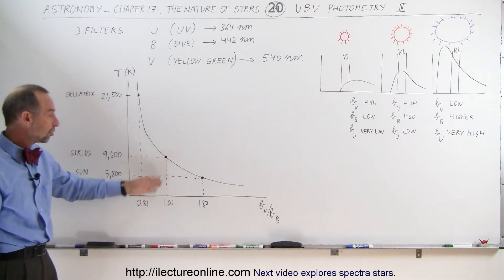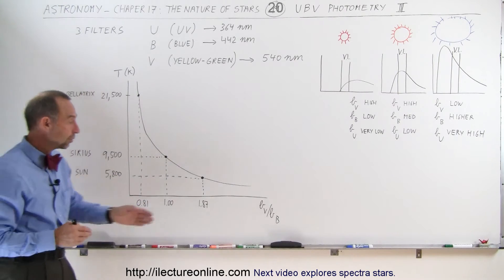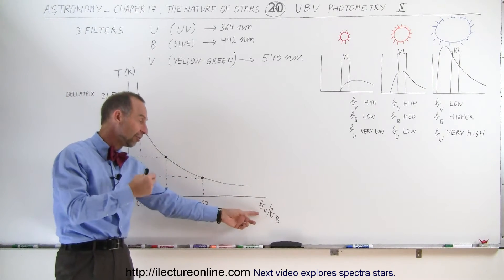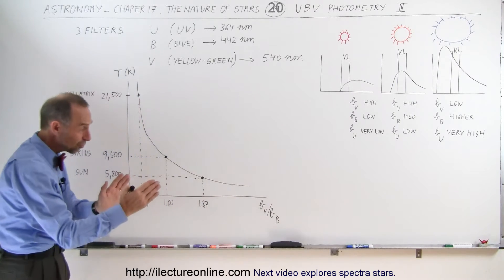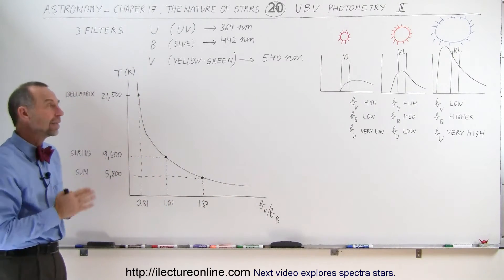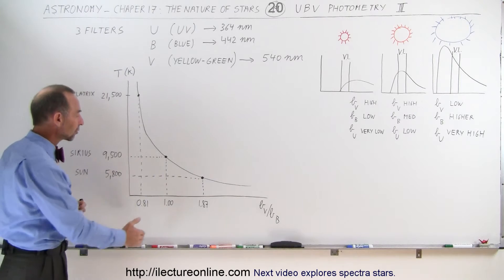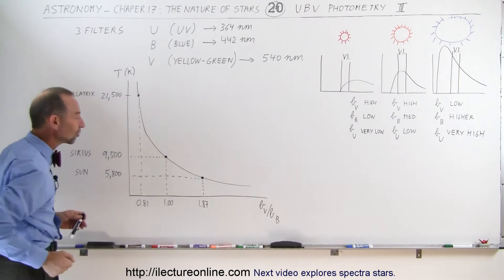We take Sirius for example, the ratio is exactly one to one. In other words, we have the exact same brightness at the visible light spectrum compared to the blue light spectrum, which means that it shifted towards the left band of the visible light spectrum, and therefore we know the surface temperature is 9,500.